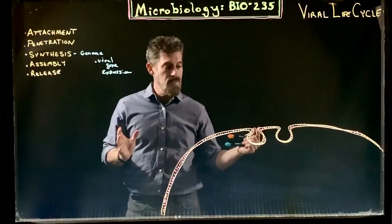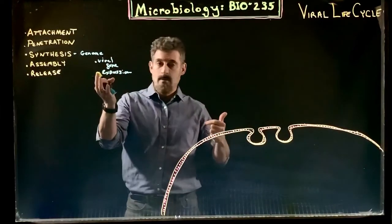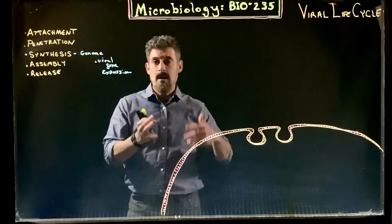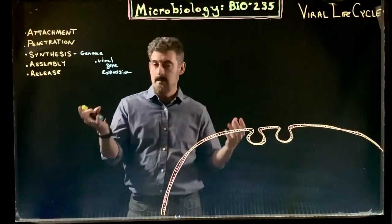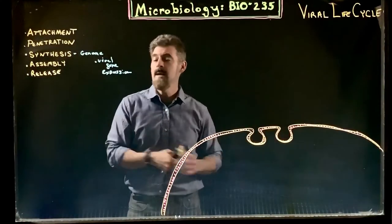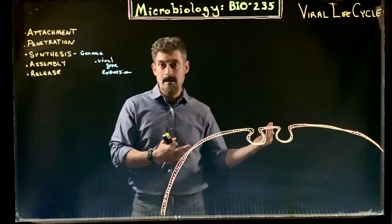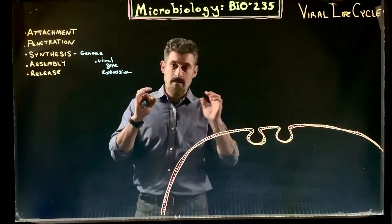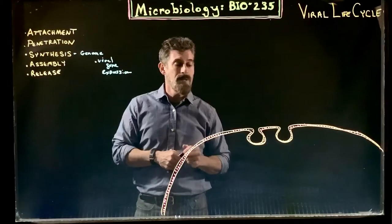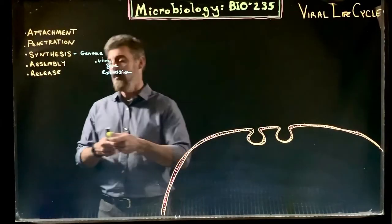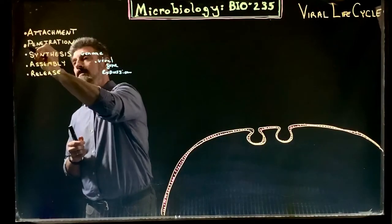Assembly is a process on its own. You have the genome, you have the different proteins — if it's enveloped or not, the capsid — all this stuff has to be put together to make the viral particle. We're going to go through steps of assembly, and then finally release: how do they get out of the cell? There are different types of mechanisms depending on the type of virus. This is going to be broken down into several pieces. Right now, we're going to get into the attachment and penetration part.